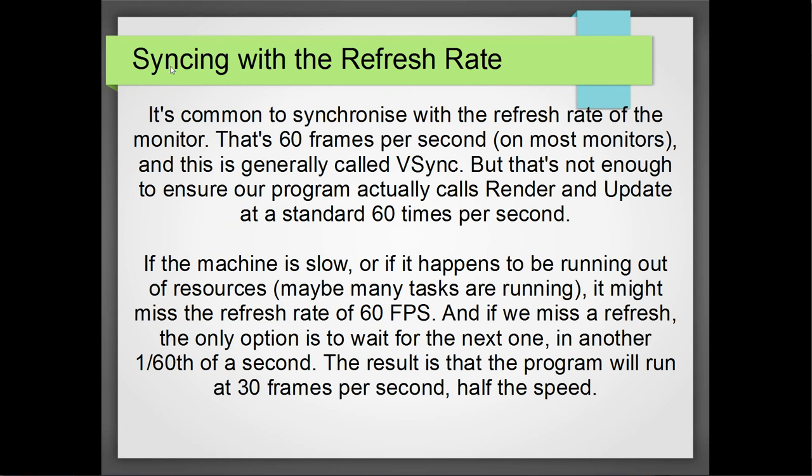One idea that's going to give us pretty much the same speed on every machine is syncing with the refresh rate of the monitor. Monitors refresh themselves at about 60 times per second — other monitors at 100 times per second, but generally it's about 60. So we can actually time our frames with the monitor. But there's trouble: if we accidentally miss a frame, our frame rate will drop back to 30 frames per second.